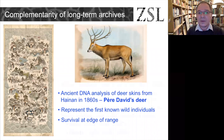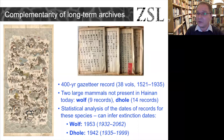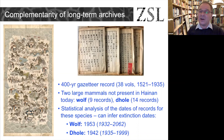Hainan's 400-year gazetteer record, comprising 38 volumes dating back to the 16th century, records two large mammal species not present today: the wolf and the dhole, a type of wild dog. Statistical analysis of the dates of records for both species estimates they likely vanished from Hainan in the 1940s or 1950s.